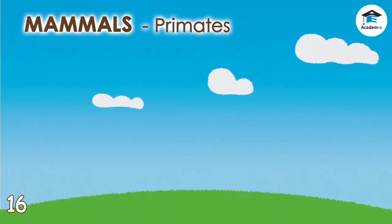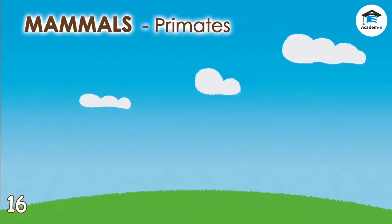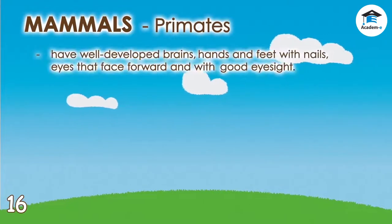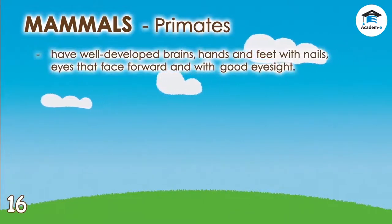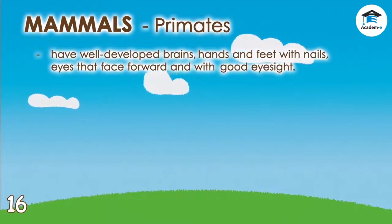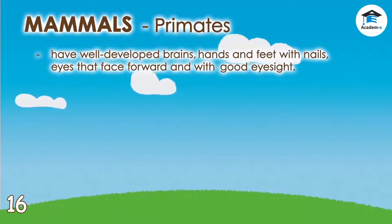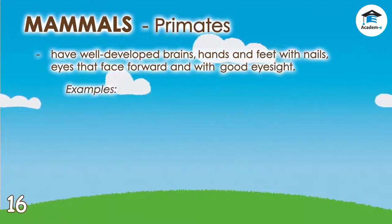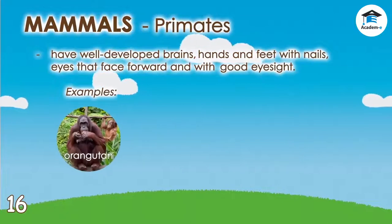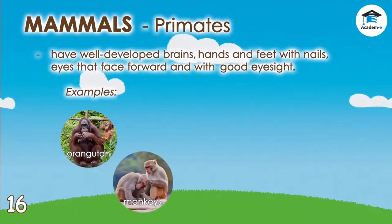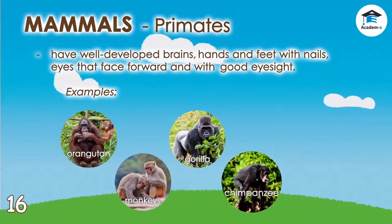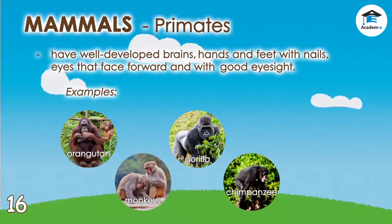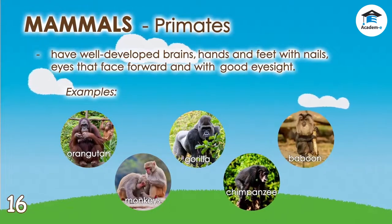Primates are the highest order of animals. They have well-developed brains, hands and feet with nails, and eyes that face forward with good eyesight. Primates include orangutans, monkeys, gorillas, chimpanzees, and baboons.